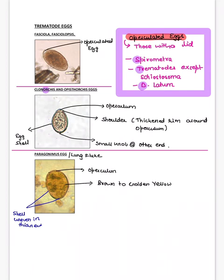Now for trematodes — operculated eggs means those that have a lid. Remember the mnemonic 'STD': S for Spirometra, T for Trematodes (except Schistosoma), and D for Diphyllobothrium latum. So if you see an operculated egg, it may be due to Diphyllobothrium latum, Spirometra, or trematodes — but Schistosoma is not possible.